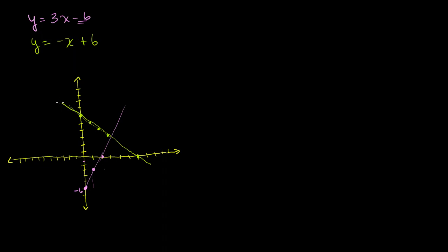So we ask ourselves: what is an x-y pair that satisfies both of these equations? Looking at the graph, it's going to be this point that lies on both lines. Just eyeballing the graph, it looks like we're at 3 comma 3 — that this is the point 3, 3. I'm doing it just by inspecting my hand-drawn graph, so let's check this answer.